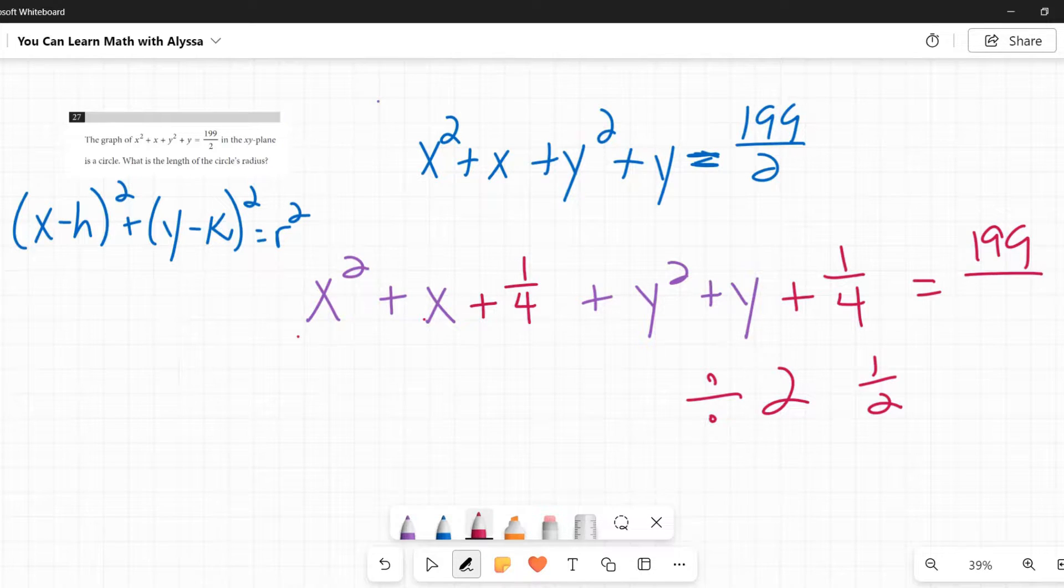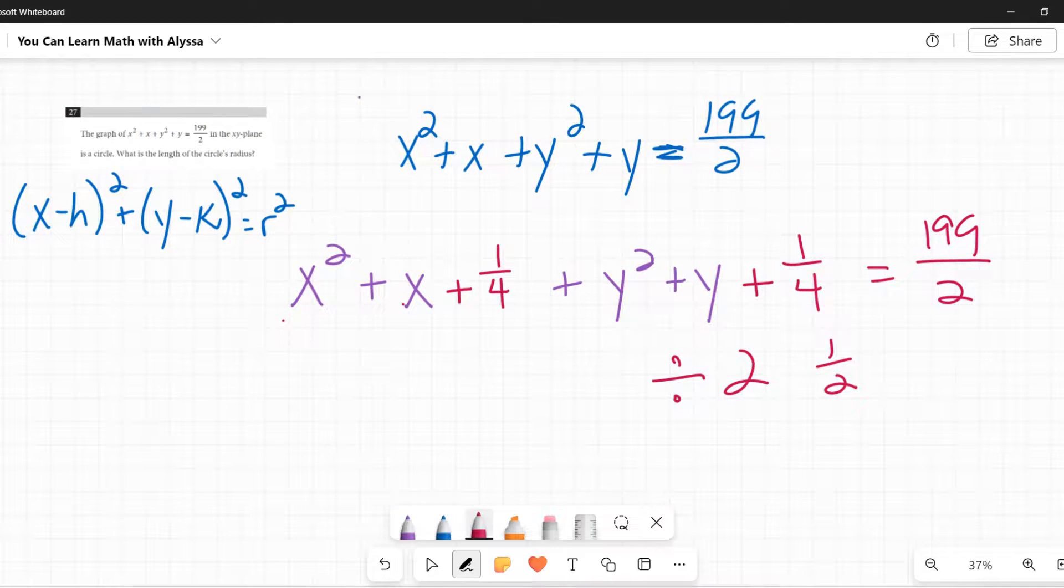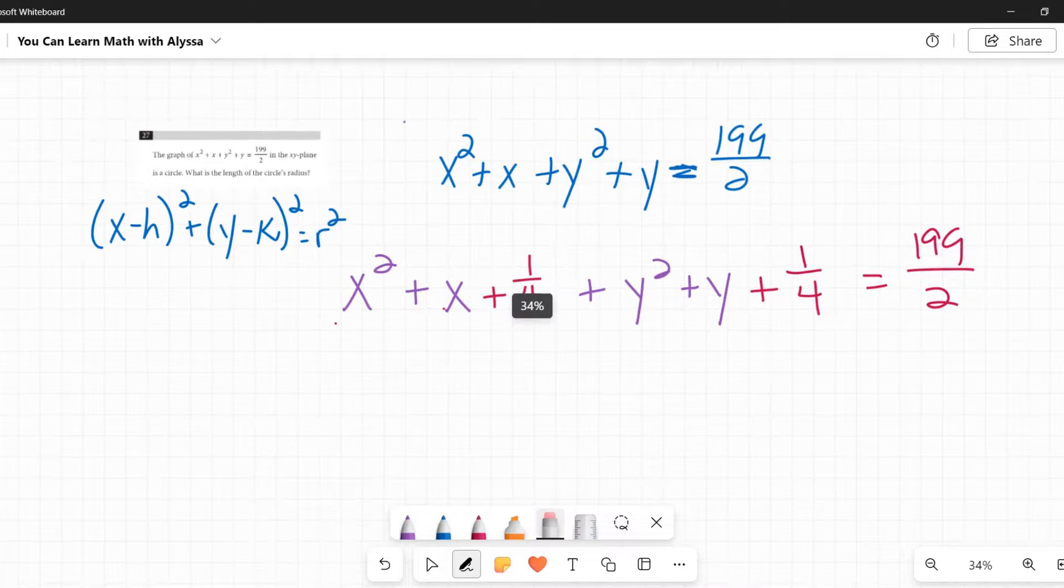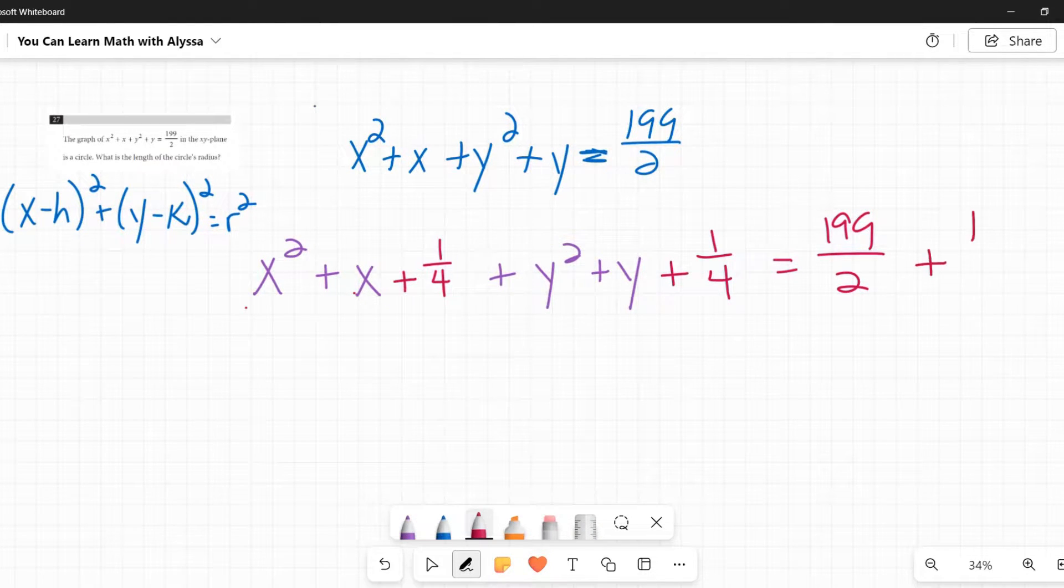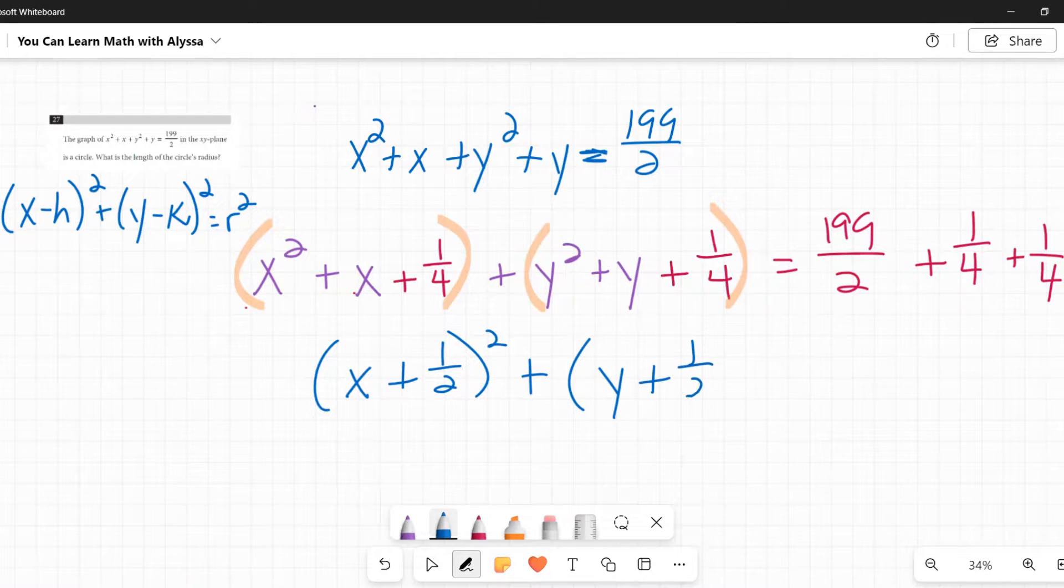Now this is an equation with an equal sign. Equal signs, everything has to stay balanced. So I added a one fourth and a one fourth to turn these into perfect squares. So I need to do the same on the other side. I need to add a one fourth and a one fourth. I'm going to rewrite these as their new perfect square selves. So here we have x plus one half squared, and then y plus one half squared equals now over here, 199 over two or 199 halves, one fourth plus one fourth. Now if I was just adding these two together, I would need to change this denominator. But because I have these two one fourths that are same denominator, I'm going to add them first. One fourth plus one fourth is two fourths, which can be simplified to one half.